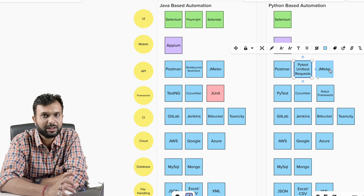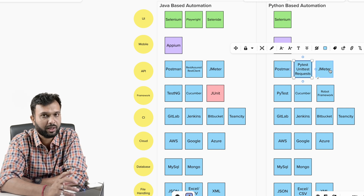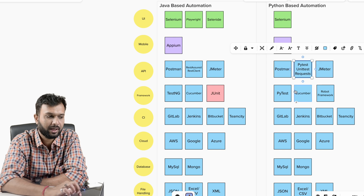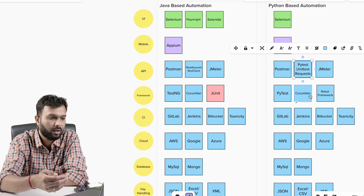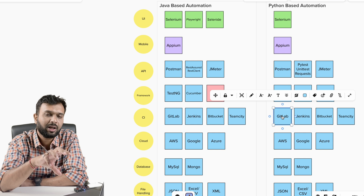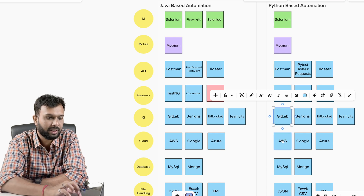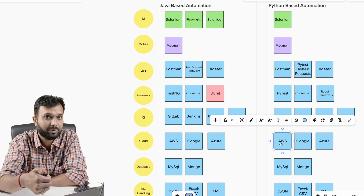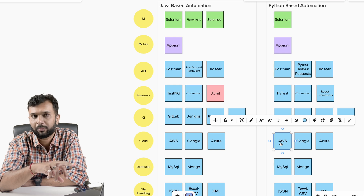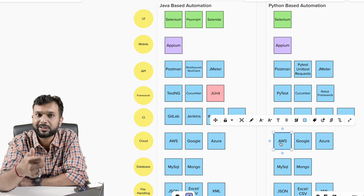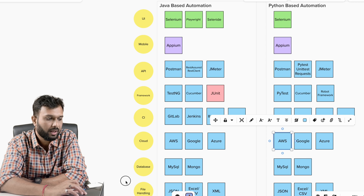For a Python-based stack, the same structure applies: for UI we have Selenium and Appium; for APIs we have Postman, and libraries like pytest, unittest, and requests. JMeter can be used for any REST-based API regardless of programming language. CI/CD will remain largely the same. For AWS, if you're sending data to Lambda, SNS, or SQS, your base code will be Python but you'll use AWS SDK libraries. Database interaction is the same — only the programming language and libraries change.